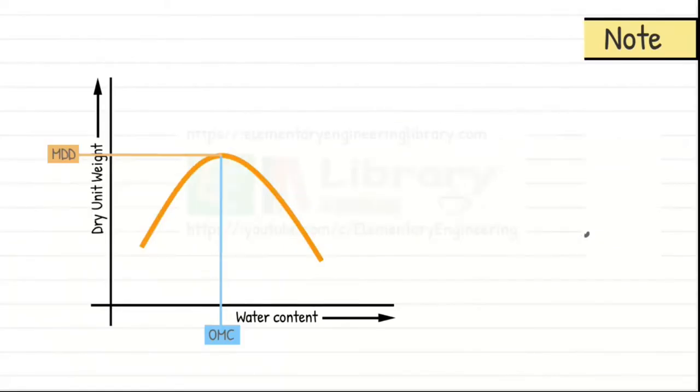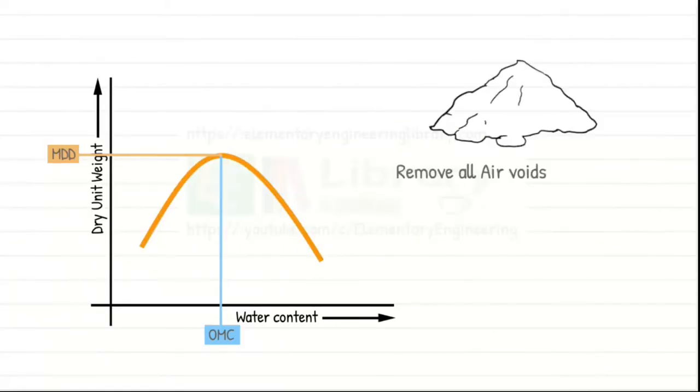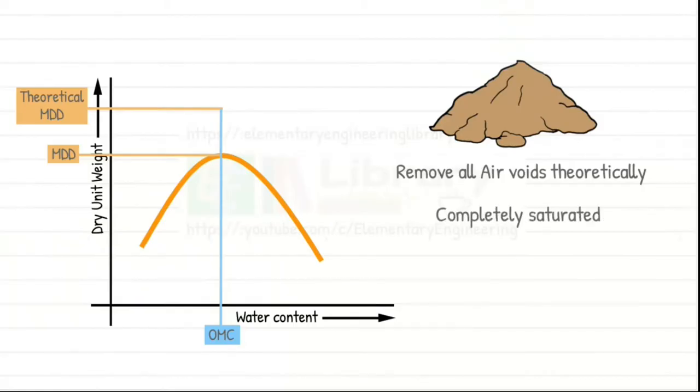But let's remove all the air voids from the soil theoretically, by compacting the soil even more to lose all its air voids. Hence, we can obtain a theoretical maximum value of dry unit weight a soil can achieve at this water content. As we did not increase the water content, but we removed all the air voids, the soil becomes completely saturated and degree of saturation is 100%.